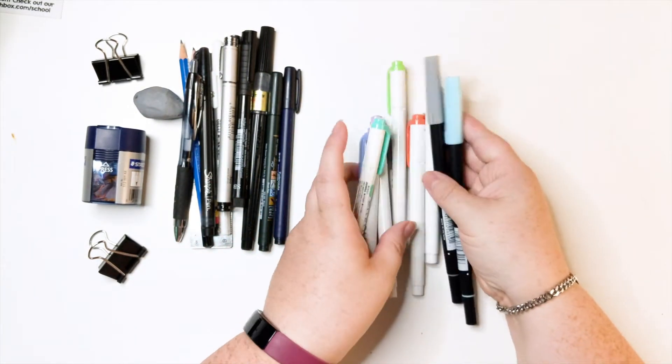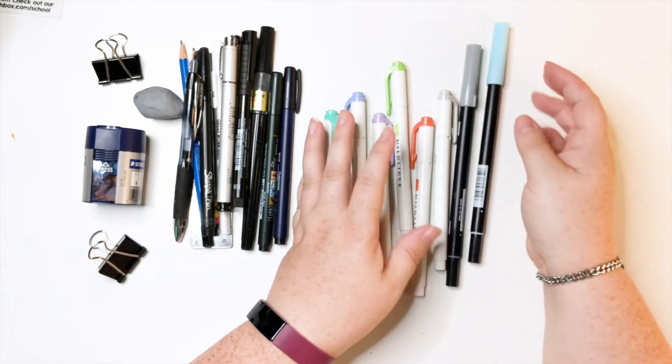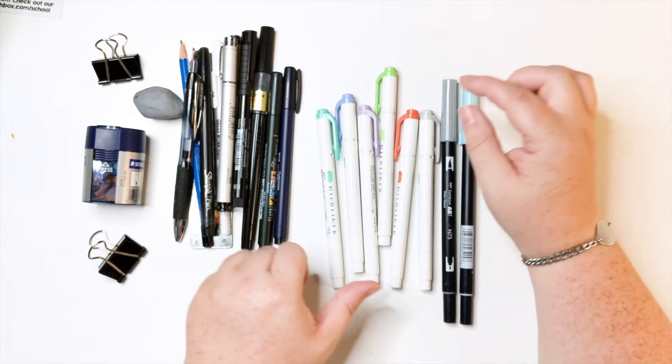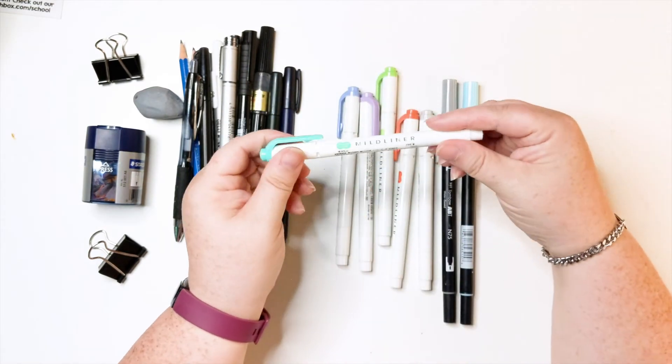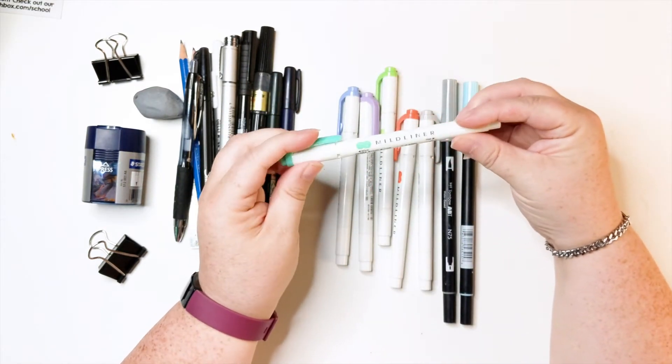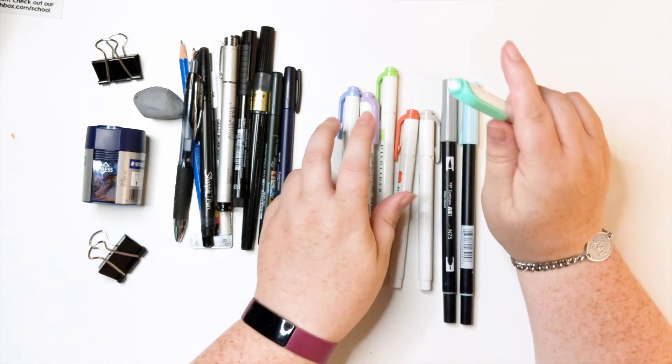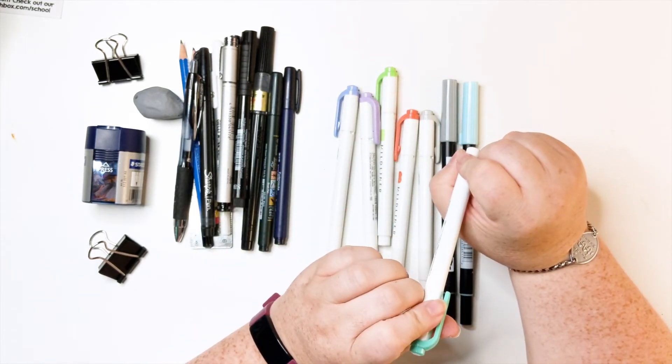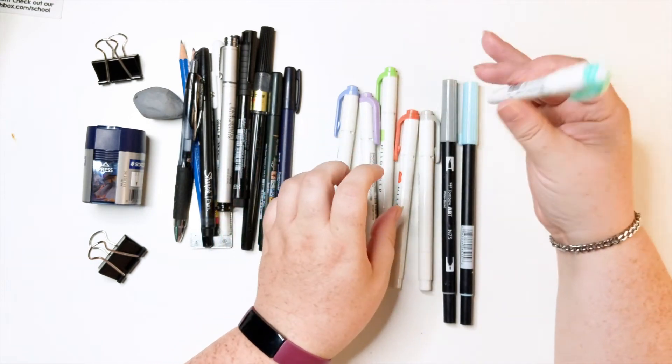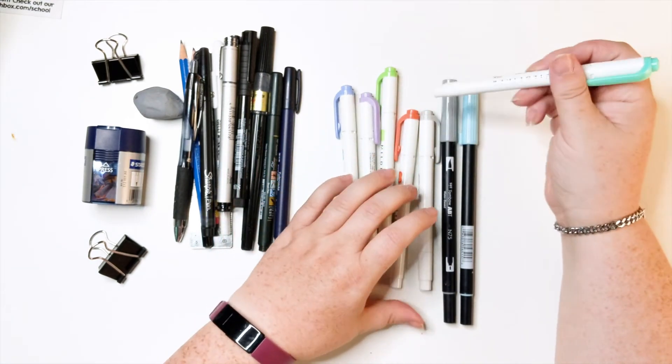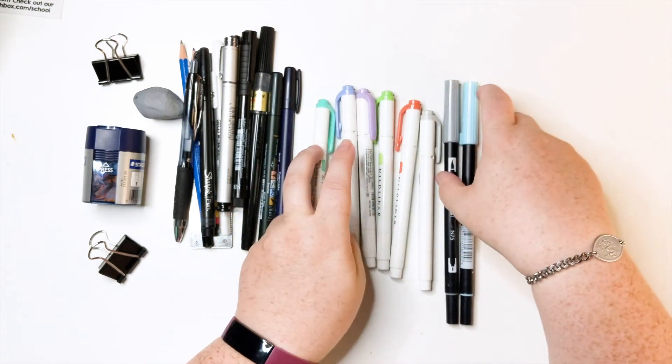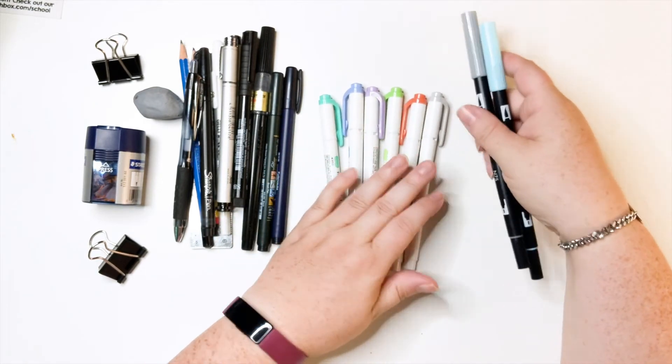And these are some of the colored ones that I like to keep in my pencil case. So these are mild liners. They're really good for highlighting and they have really nice colors. If you don't want that traditional, like, fluorescent color, they do have a few colors like that, but I do like that they have more variety.